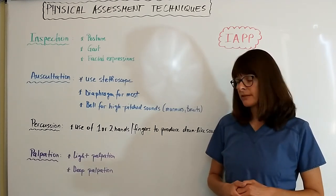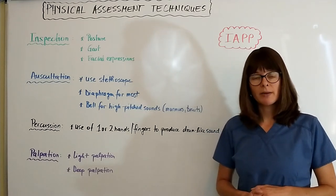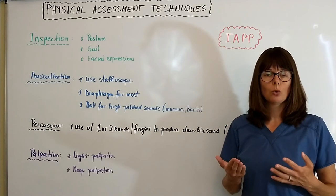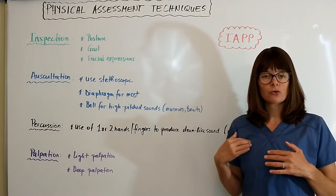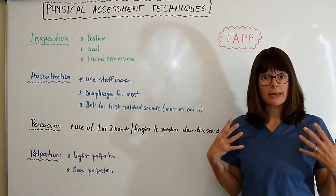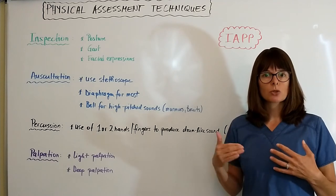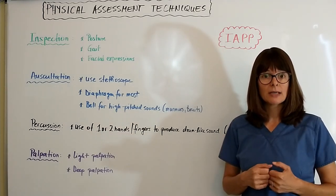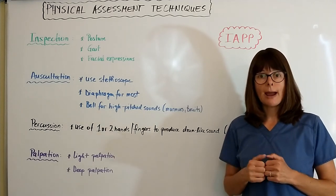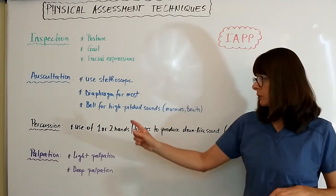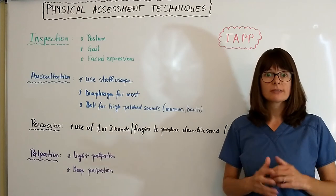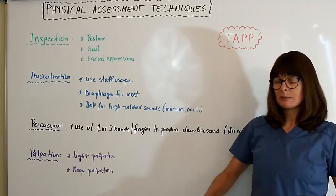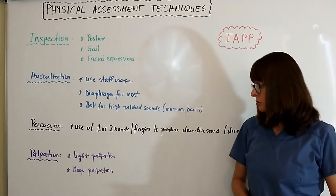There is direct and indirect percussion. Basically, you use your hands or fingers as a tool to drum on the patient's chest, abdomen, or sinuses to produce a certain sound. Depending on the sound produced, you can tell whether it is normal or abnormal. Watch my separate video where I go over the different sounds you hear with percussion.